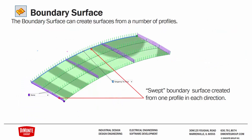The first way of creating a boundary surface I call a swept boundary surface. It's created from one profile in each direction. The blue line is the profile in direction one and the purple line is the profile in direction two. This profile sweeps along so that with only two profiles we end up with a four-sided surface, avoiding that degenerate point.